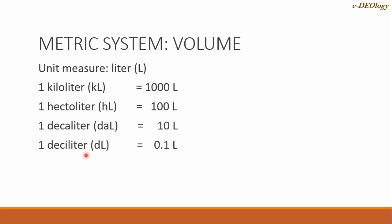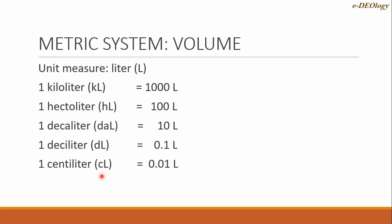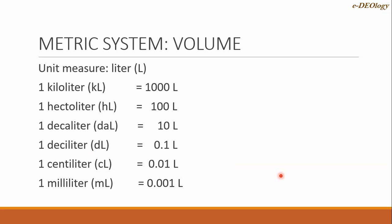The next is deciliter — one deciliter equals 0.1 liter, and we may write that one liter equals 10 deciliters. The next is centiliter, symbol CL — one centiliter equals 0.01 liter. The last is milliliter, symbol mL — one milliliter equals 0.001 liter, and we may write that one liter equals 1,000 milliliters.